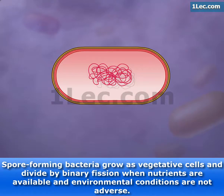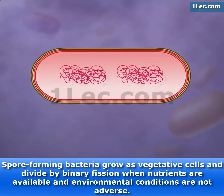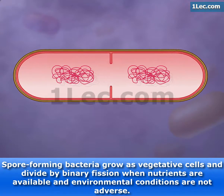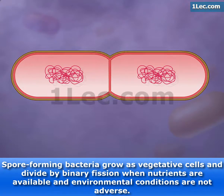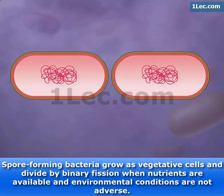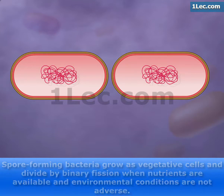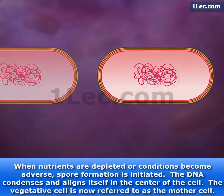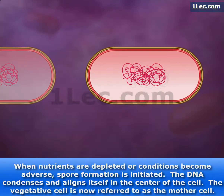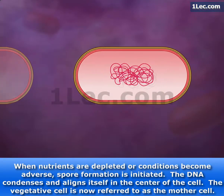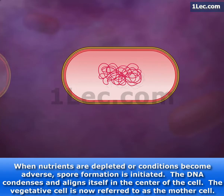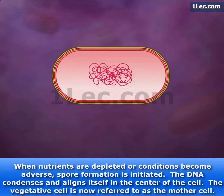Spore forming bacteria grow as vegetative cells and divide by binary fission when nutrients are available and environmental conditions are not adverse. When nutrients are depleted or conditions become adverse, spore formation is initiated.